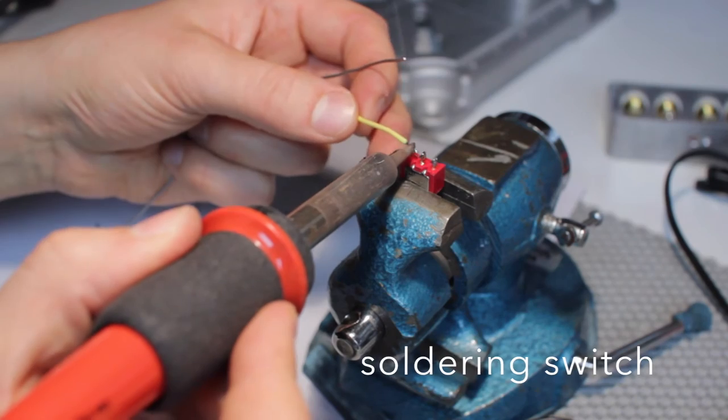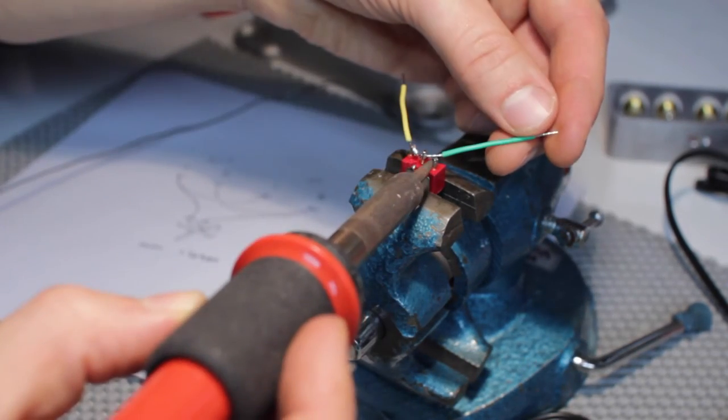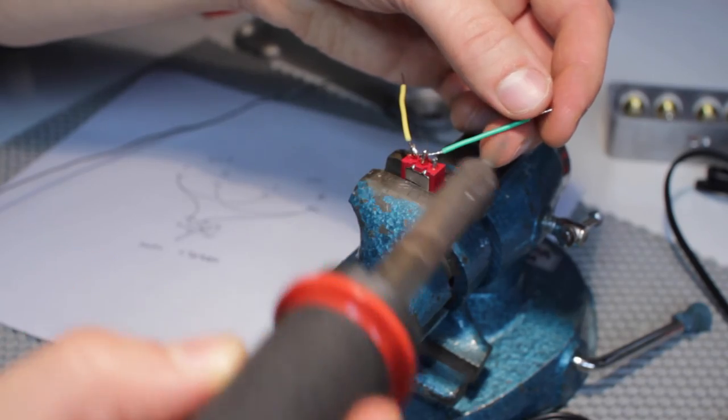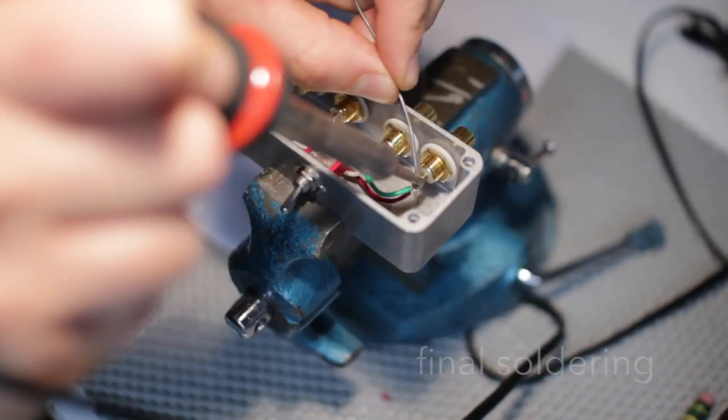Here you can see how much easier it is to lightly clamp the switch in a way that's more accessible, and just solder it like this. And now it's ready to install in the enclosure, and we'll solder the final two wires.